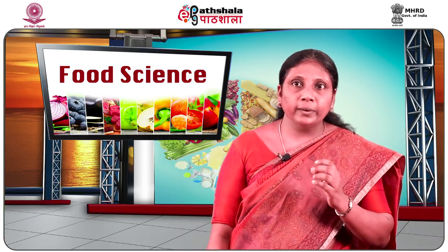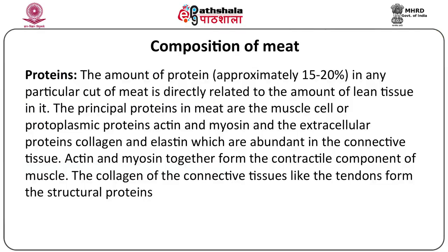Now let us look into the protein content of meat. The lean muscle contains 15 to 20 percent of protein, directly related to the amount of lean tissue in it. The principal proteins in the muscle of meat are actin and myosin — the protoplasmic contractile proteins that help in the contraction and relaxation of muscles.